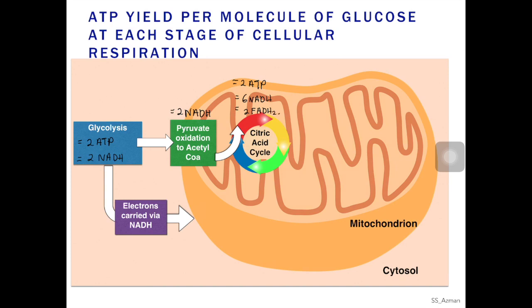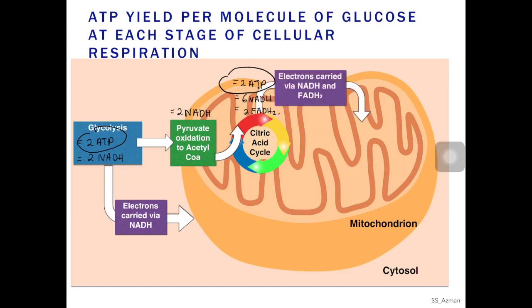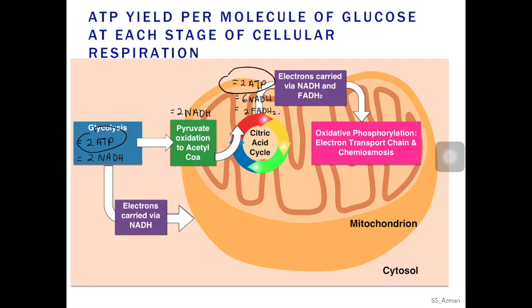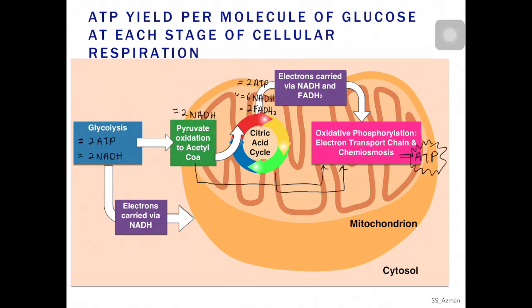The number of ATPs produced in glycolysis and Krebs cycle is pretty direct because we already get ATP from that. Now the NADH molecules and also FADH2 will undergo oxidative phosphorylation in order to generate ATPs. The NADH and FADH2 that are already located in the mitochondria can go straight away for electron transport chain and chemiosmosis and ATP will be generated.